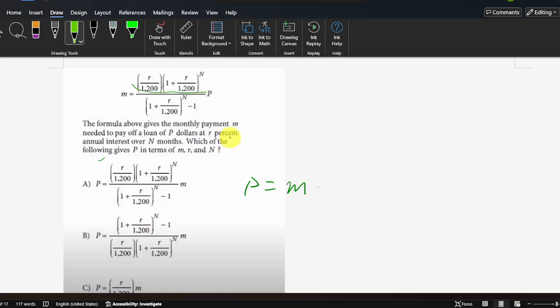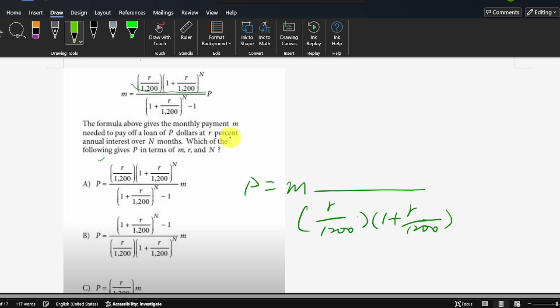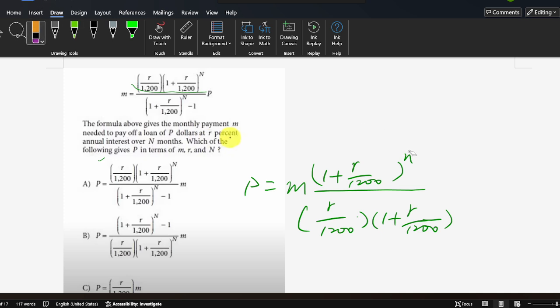We divide by r over 1,200 times (1 + r/1,200)^n. So divide. Then times (1 + r/1,200)^n - 1.